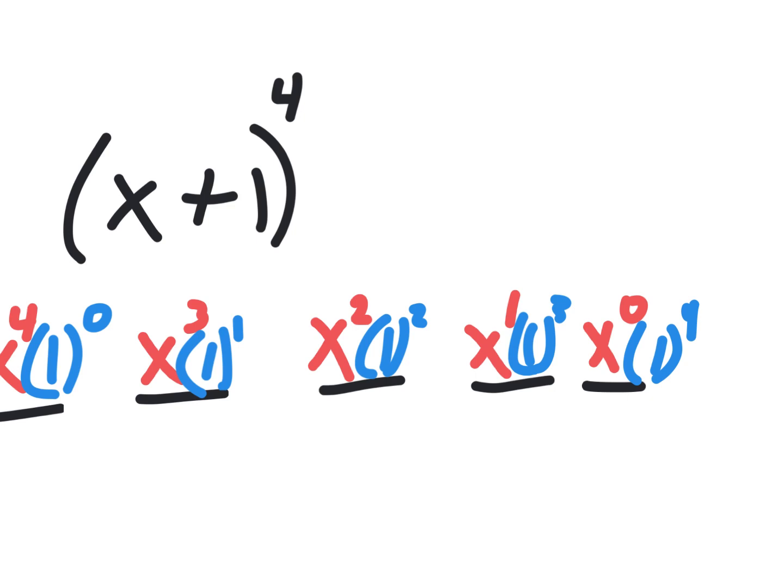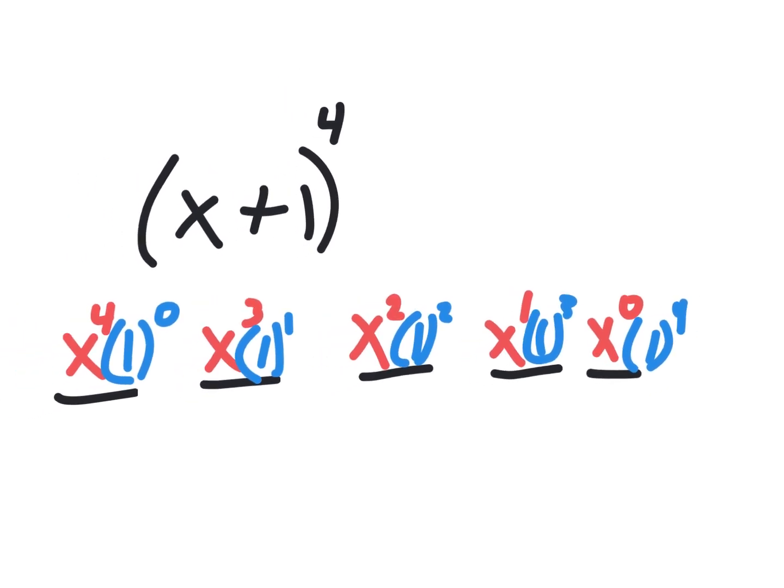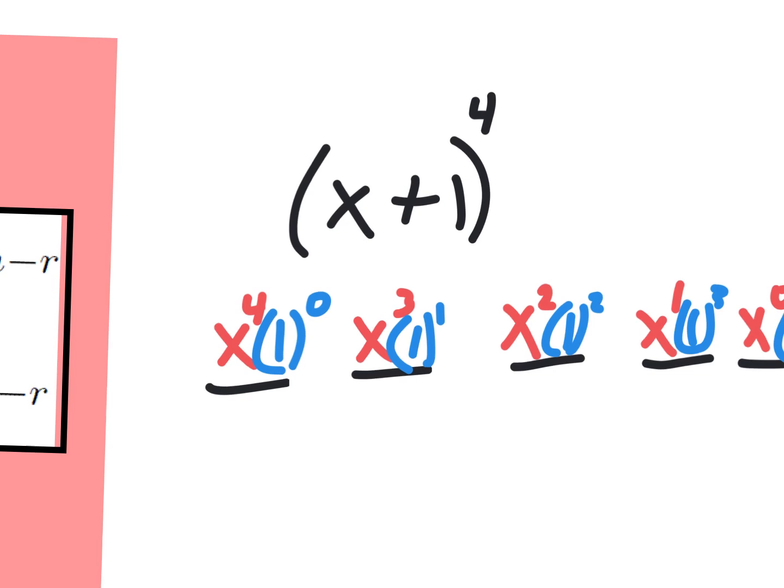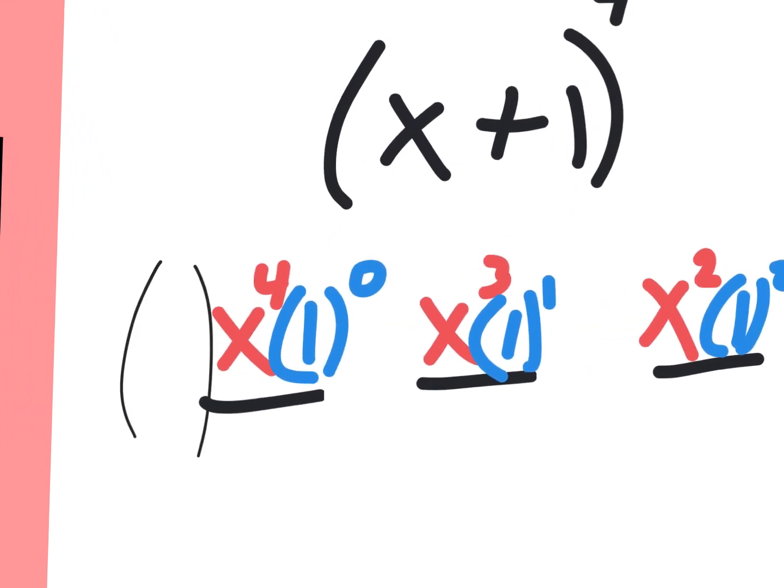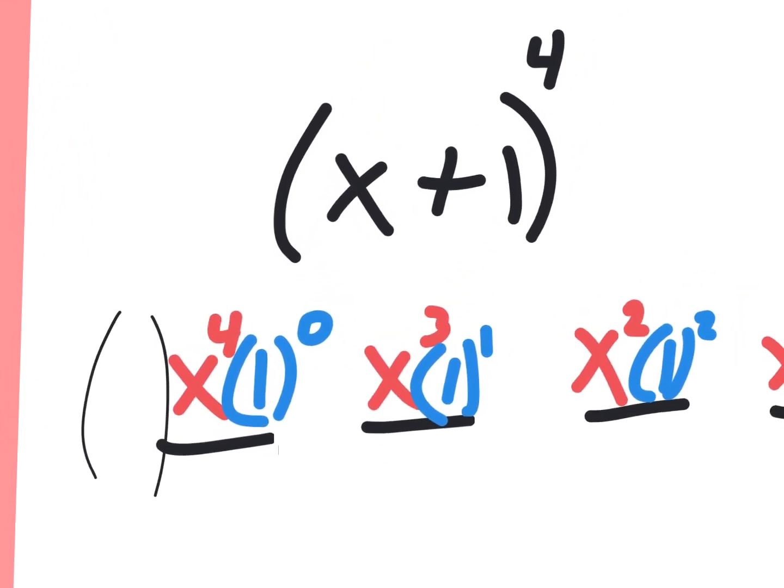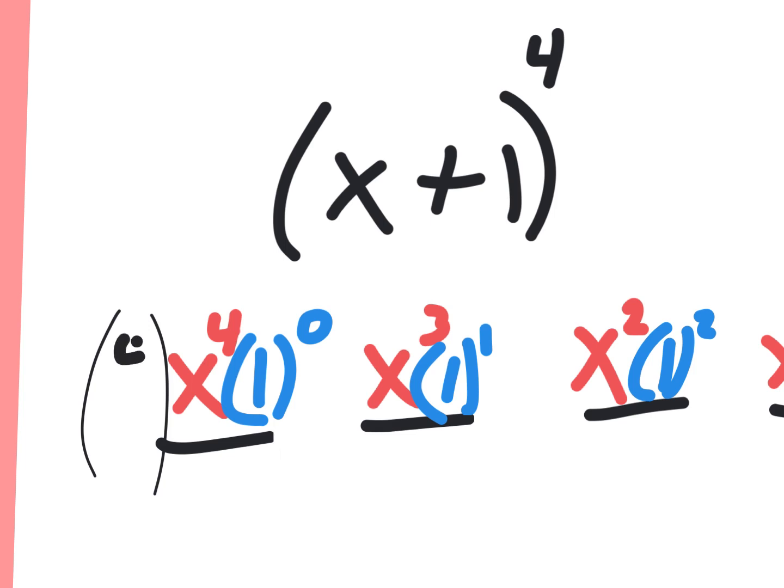Allison, what do you say? So like this one would be what, choose what? Four, choose zero. Excellent. Can you do that in your head? Yeah, it's one. If you're having four things and you're picking zero of them, there's one way to do that. So that one's one. This one's four, choose one. A little harder, but it's still easy. Four things, you want to choose them one at a time. So that one's four.